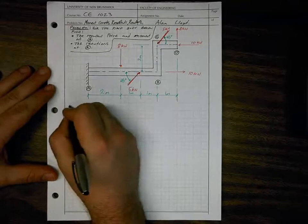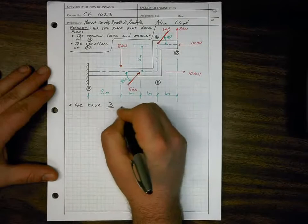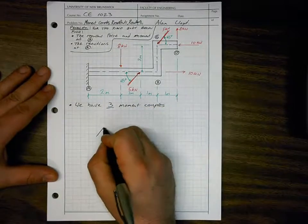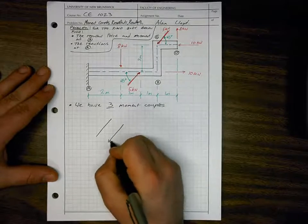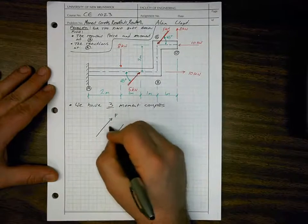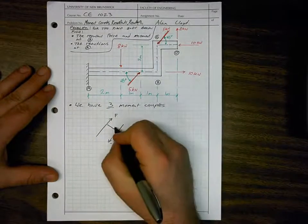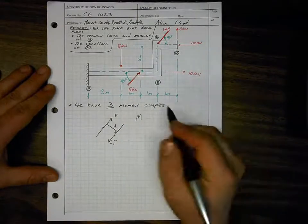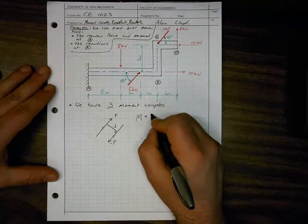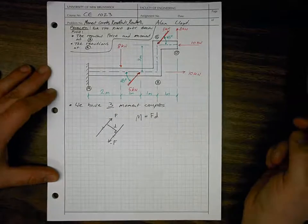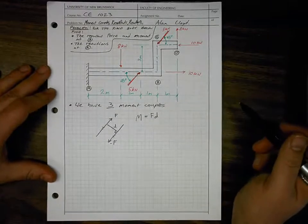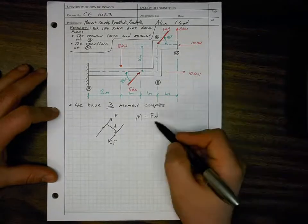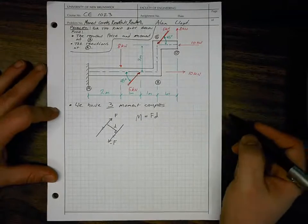We have three moment couples. A moment couple is a set of forces that are parallel but opposite — equal and opposite forces separated by a distance d. The moment due to that couple is simply equal to force times distance. We went through the derivation in class and saw that we can apply our sum of moments and determine a resultant moment at any location on or off the object, and it would always work out to be equivalent to force times distance.